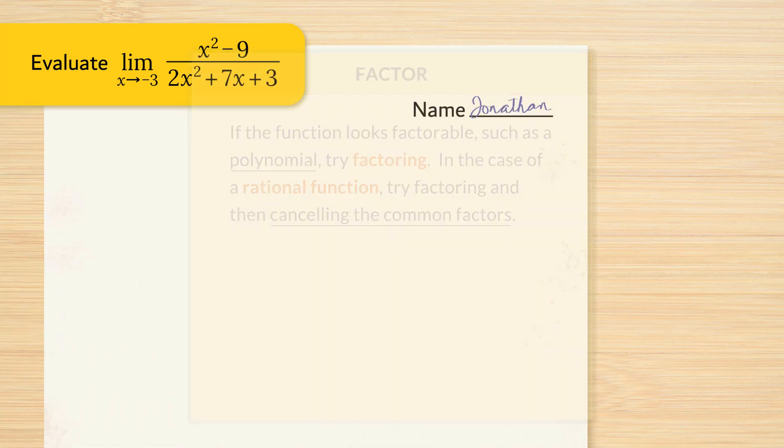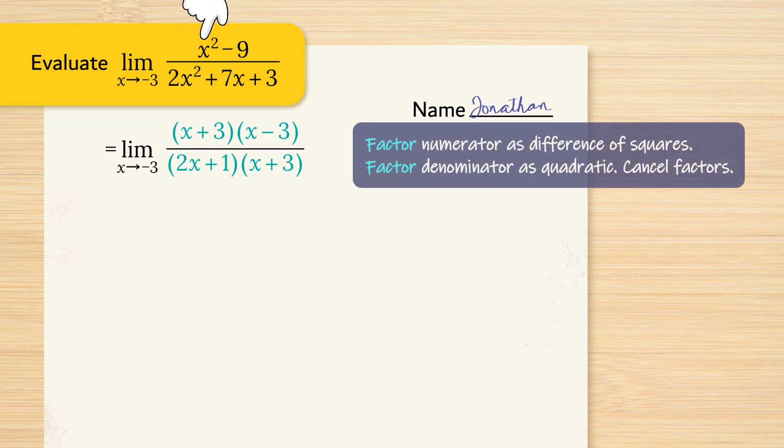We can factor the numerator as a difference of squares. x squared minus 9, the x squared is the square of x, and 9 is the square of 3. Difference of squares. We can factor the numerator as x plus 3, x minus 3.